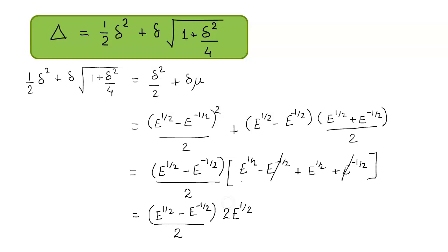The 2 gets cancelled and then we open up the bracket and multiply the terms. This gives the value e minus 1. Now what is this value equal to? This is the expression for our forward difference operator delta. So this is how we have proved our expression.